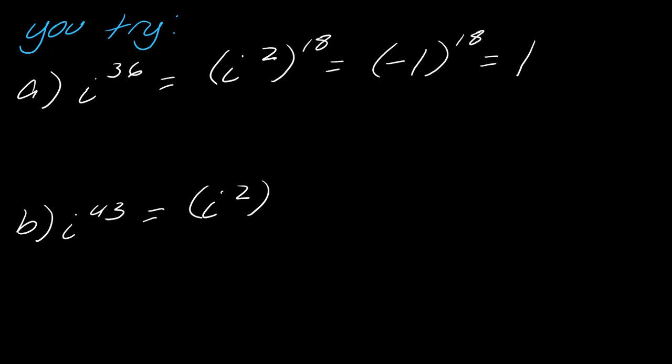So let's do this again for i to the 43. So 2 goes into 43, well, that will go in evenly 21 times. But then it will have this extra power of i. So 2 times 21 is 42, plus 1 will give me 43. So you want to just confirm that before you keep going. So now let's work this out. This becomes negative 1 to the 21st times i. So this will end up still being negative. So this whole thing will just equal negative i.